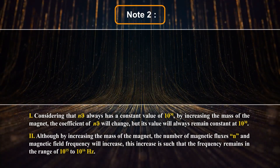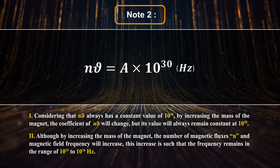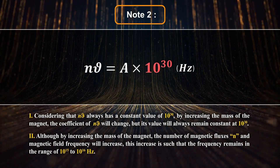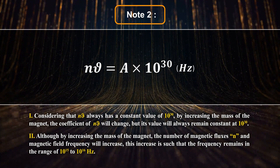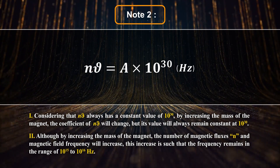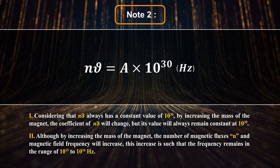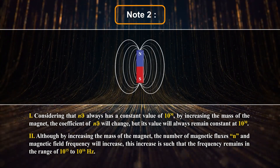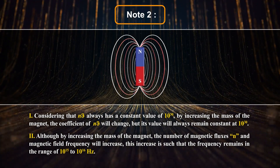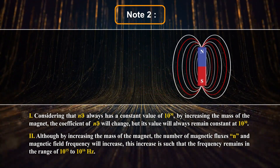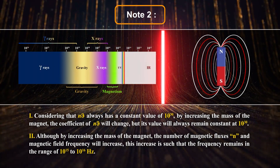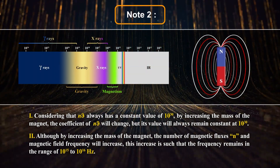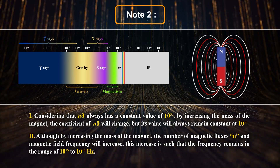Note 2: Considering that N×ν always has the constant value of 10 to the power of 30 — by increasing the mass of the magnet, the coefficient of N×ν will change, but its value will always remain constant at 10 to the power of 30. Although by increasing the mass of the magnet the number of magnetic fluxes N and magnetic field frequency ν will increase, this increase is such that the frequency remains in the range of 10 to the power of 15 to 10 to the power of 16 Hz.